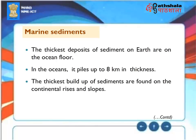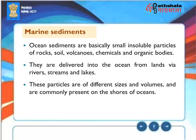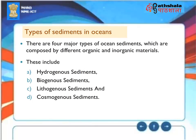Marine Sediments: The thickest deposits of sediment on Earth are on the ocean floor, piling up to 8 kilometers in thickness, with the thickest buildup on continental rises and slopes. Ocean sediments are basically small, insoluble particles of rocks, soil, volcanic material, chemicals, and organic bodies, delivered into the ocean from lands via rivers, streams, and lakes. There are four major types of ocean sediments: hydrogenous sediments, biogenous sediments, lithogenous sediments, and cosmogenous sediments.